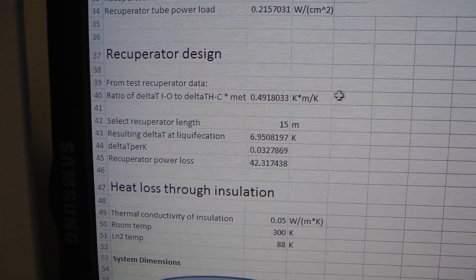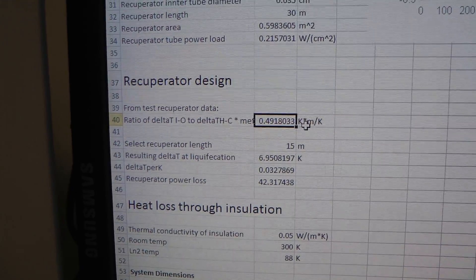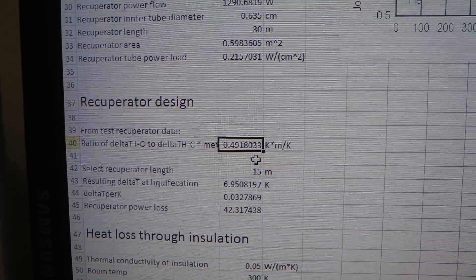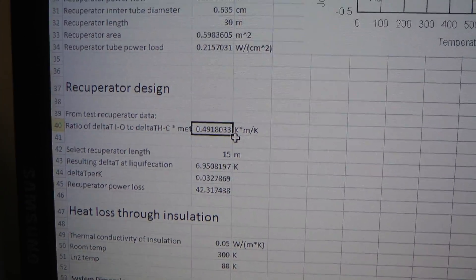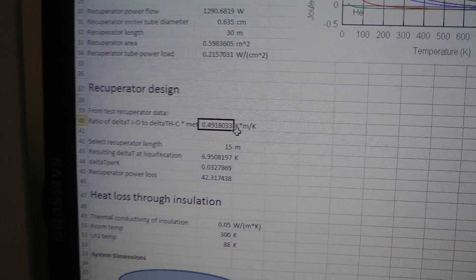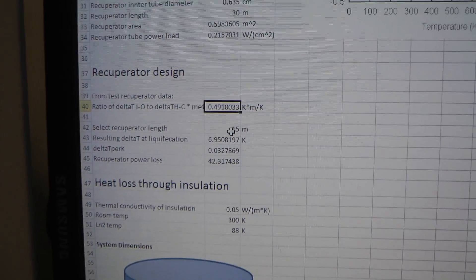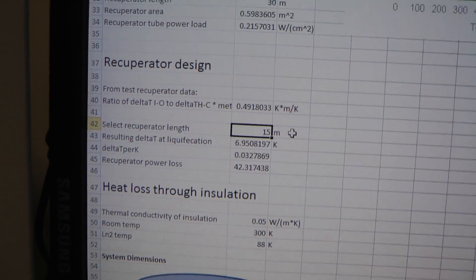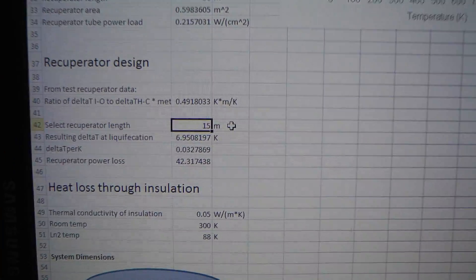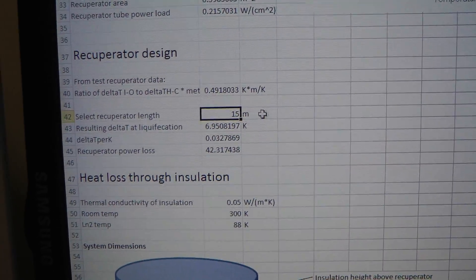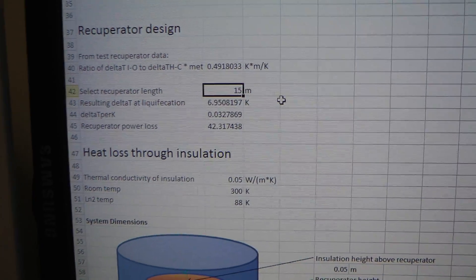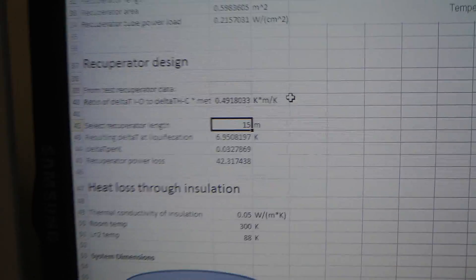Looking at the recuperator design, there's that number we found from the test recuperator. Basically divide that by the length of the recuperator in meters, and you'll get the ratio of the hot-cold temperature to the in-out temperatures. And I just picked a value, actually quite a reasonable number, about 15 meters length. That's not that much tubing, even if you have to buy it new. At full liquid nitrogen temperature on one side, ambient on the other, we only get about 7 degrees delta T, which is pretty good.